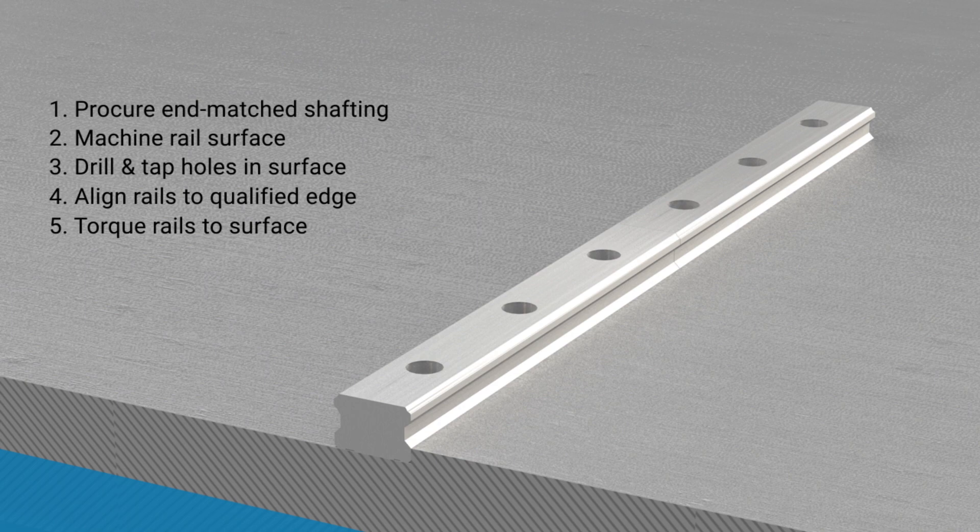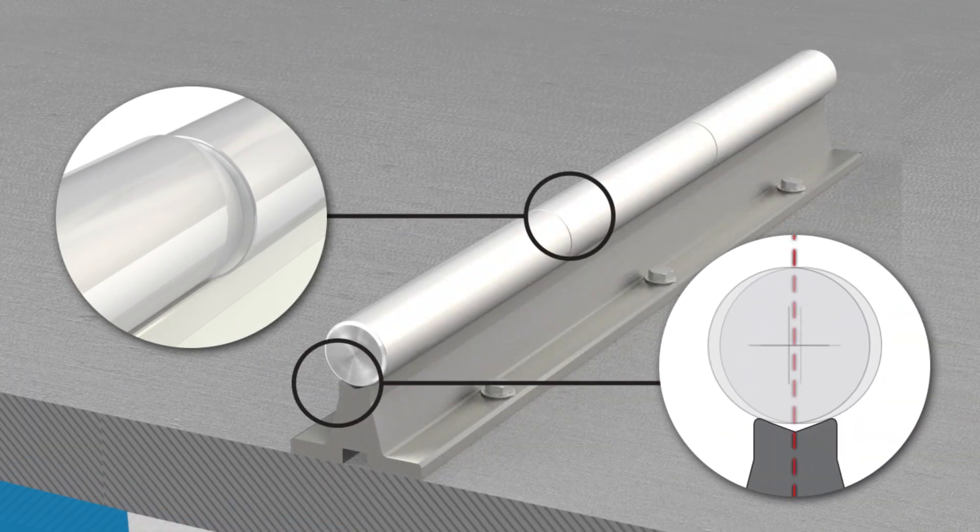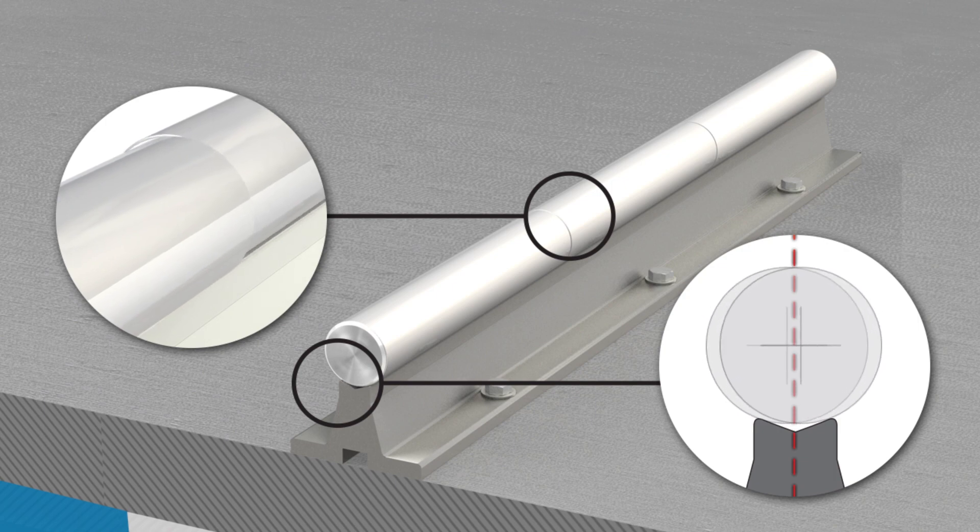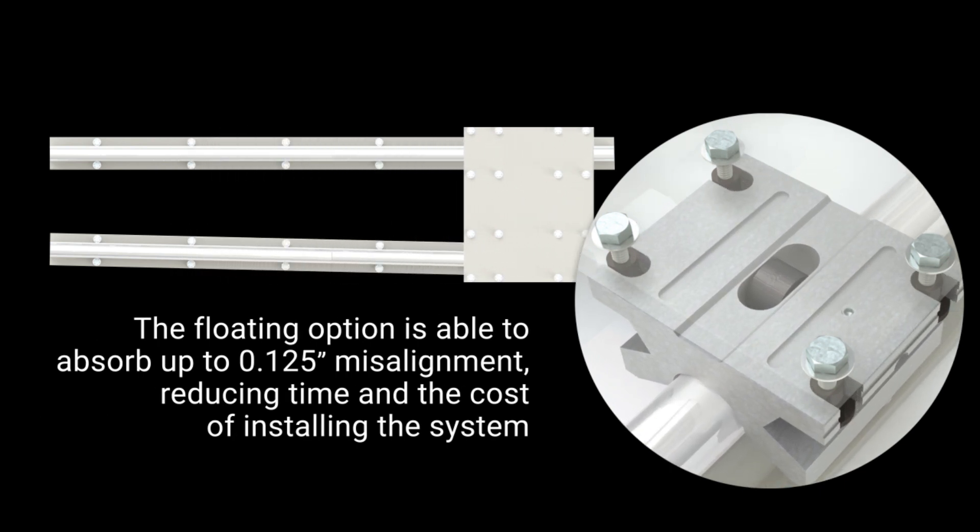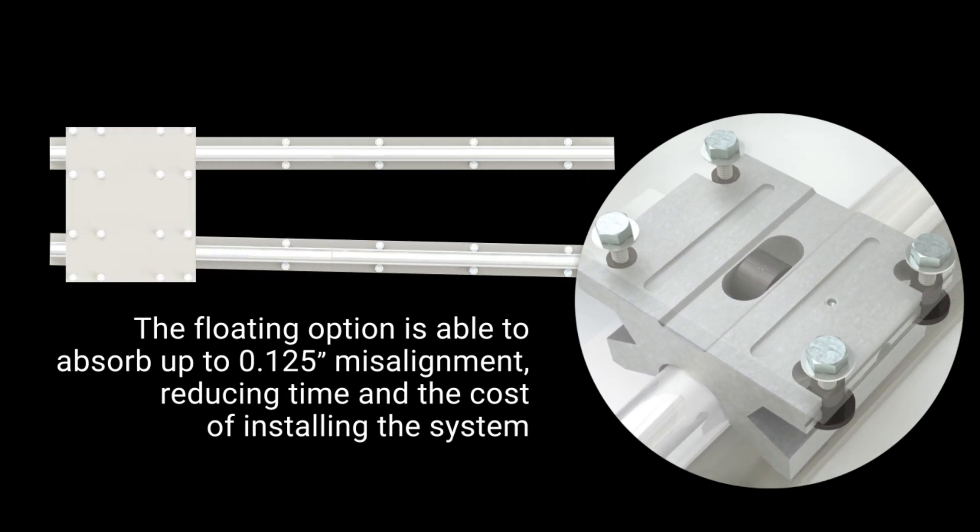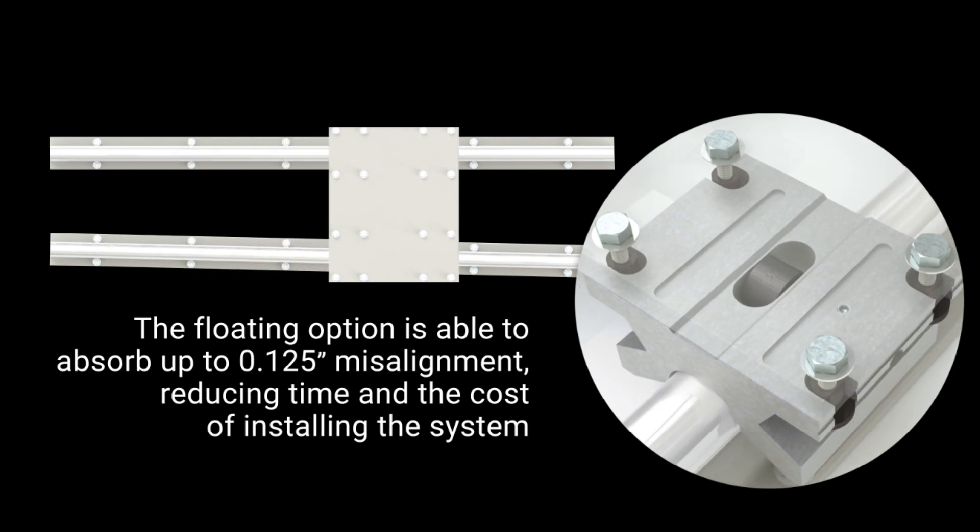But with the roller-bearing pillow blocks, the shaft is naturally aligned vertically when using a support rail. And when utilizing the floating block option, up to 125 thousandths of an inch out of parallelism or deflection can be absorbed, reducing time, effort, and the cost of installing a system.